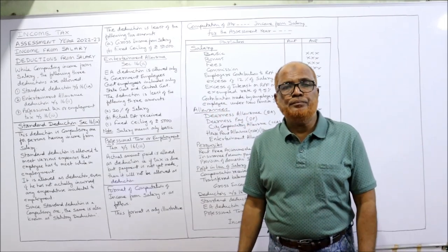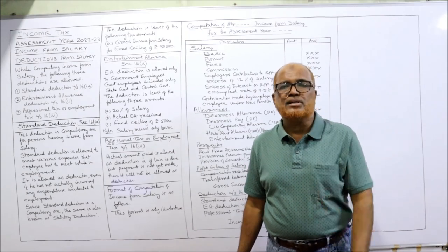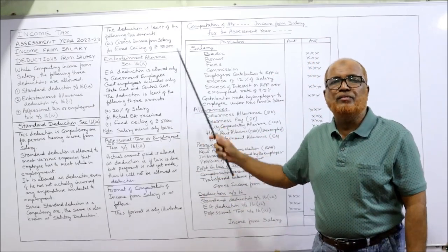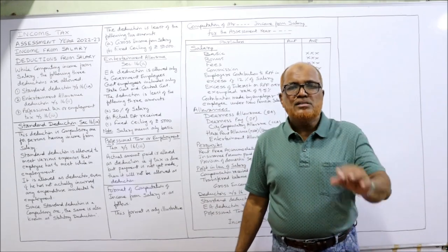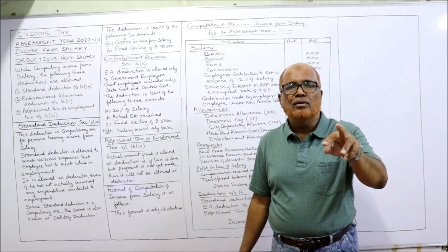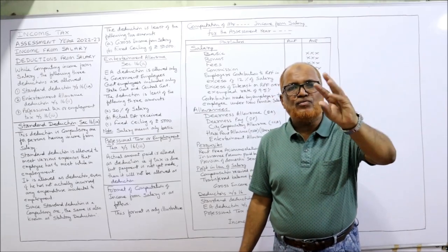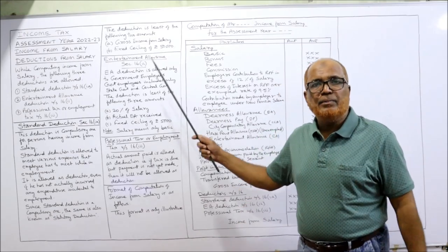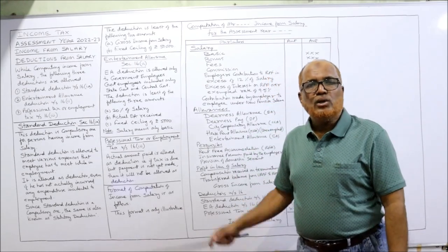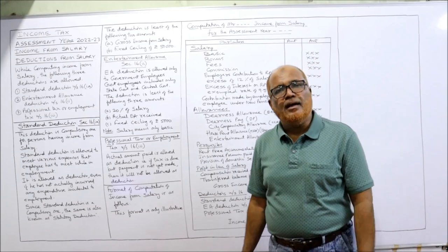The standard deduction is the least of the following two amounts: gross income from salary or a fixed ceiling of rupees 50,000, whichever is lower. For example, if gross income from salary is 40,000 and the ceiling is 50,000, then 40,000 is lower, so 40,000 will be allowed as deduction. If gross income from salary is 5 lakh, then 50,000 is lower, so 50,000 is the standard deduction.